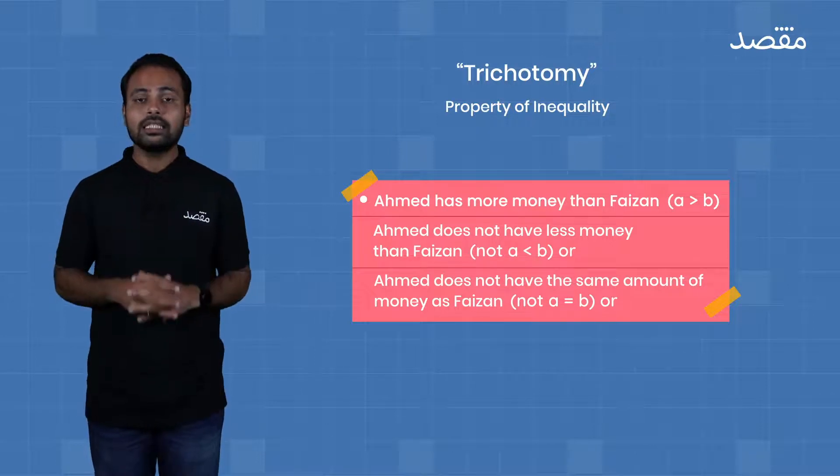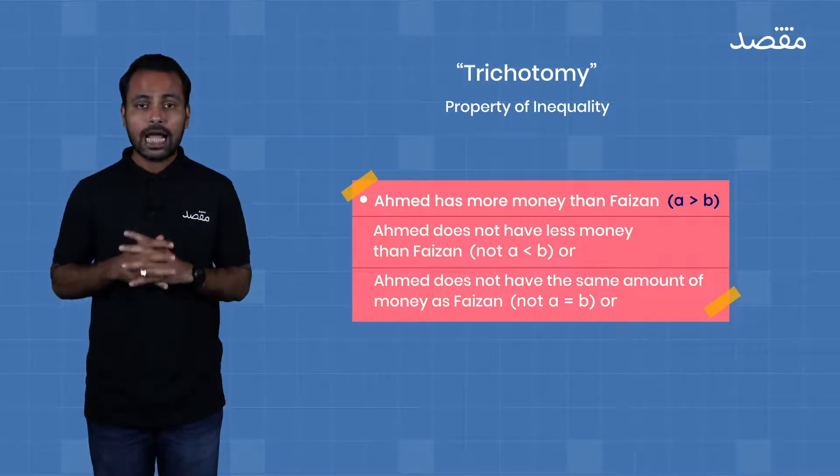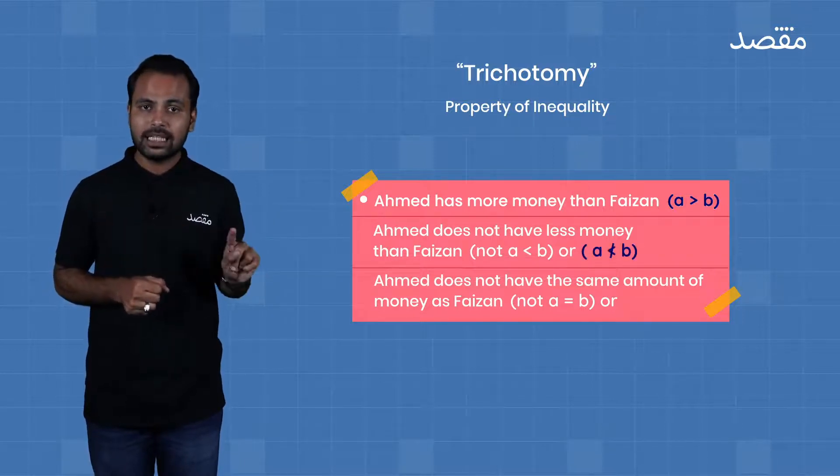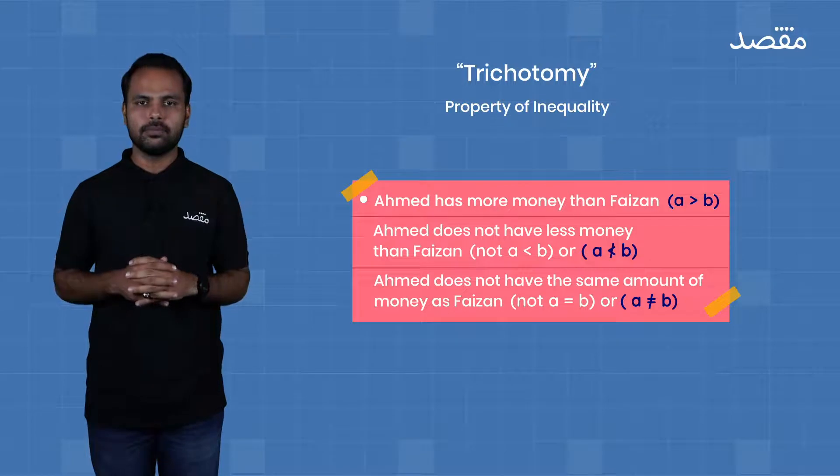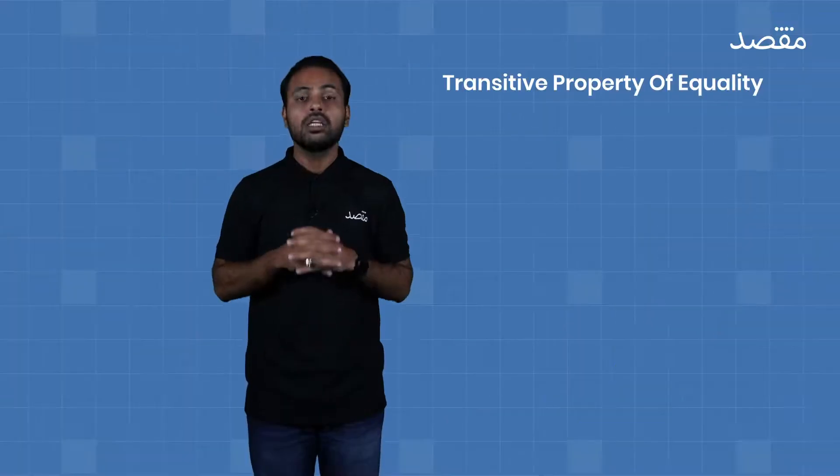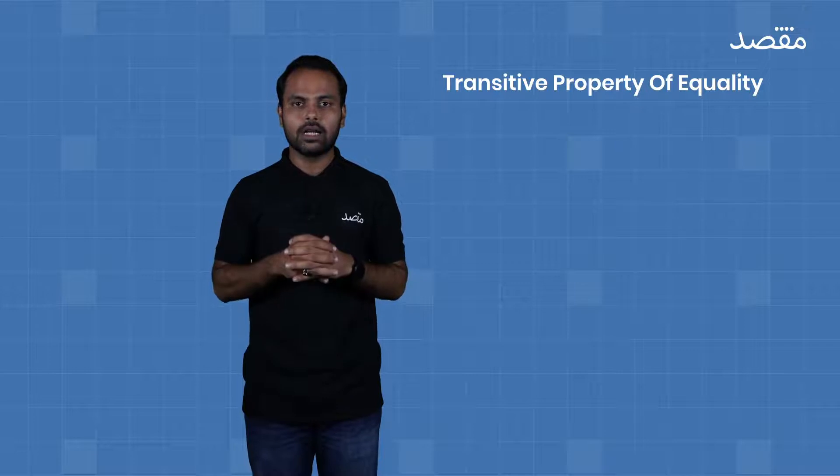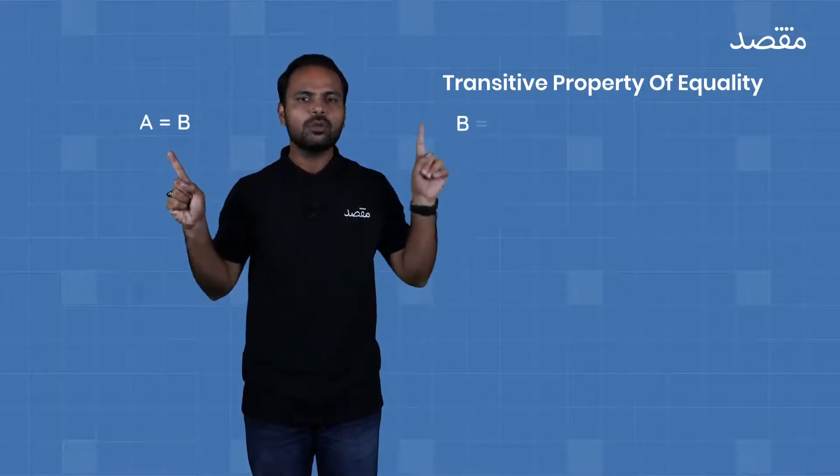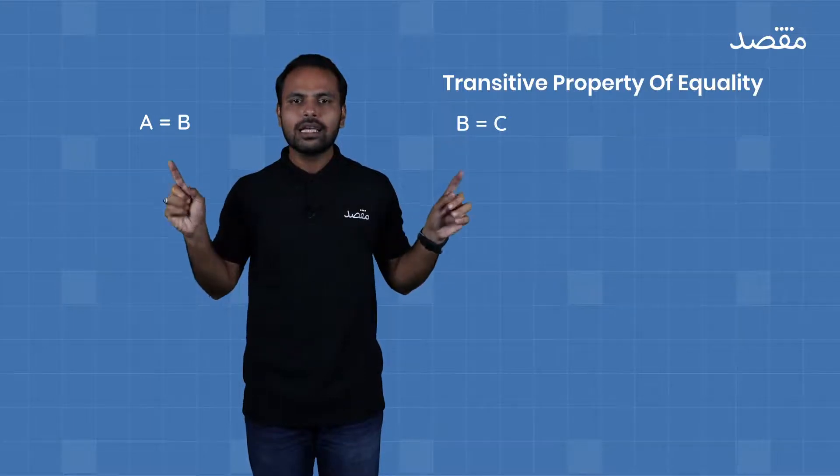Basically, the law of trichotomy means that these three statements are actually the same. What I'm trying to say is that if a is greater than b, that means a is more than b. a cannot be less than b or equal to b.